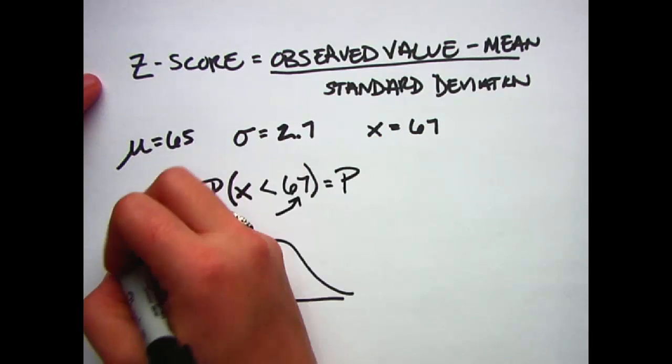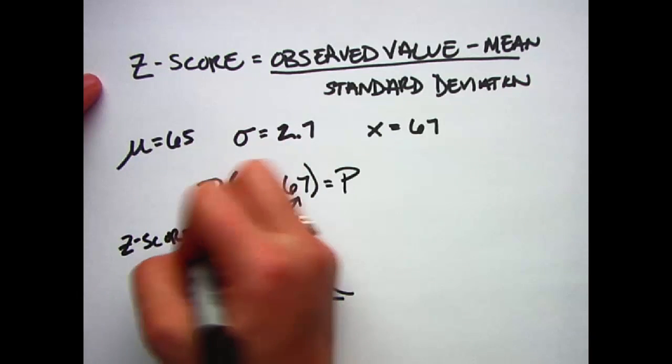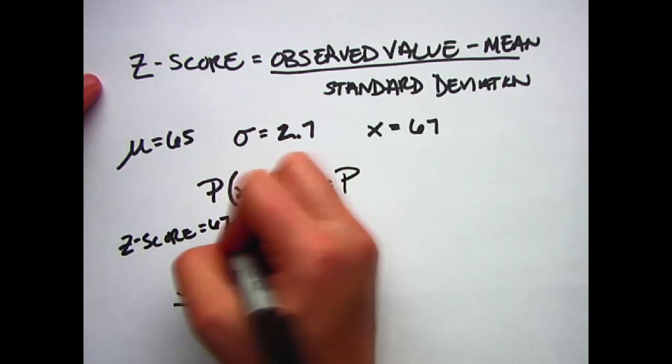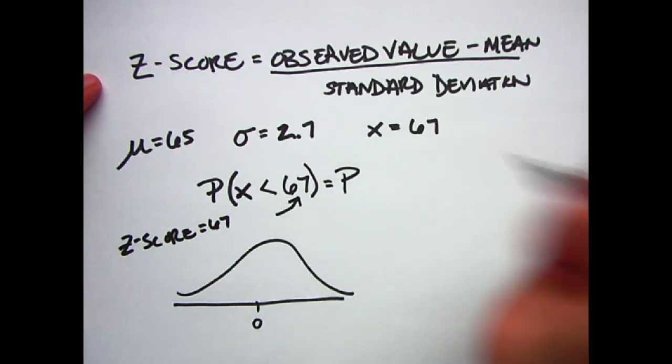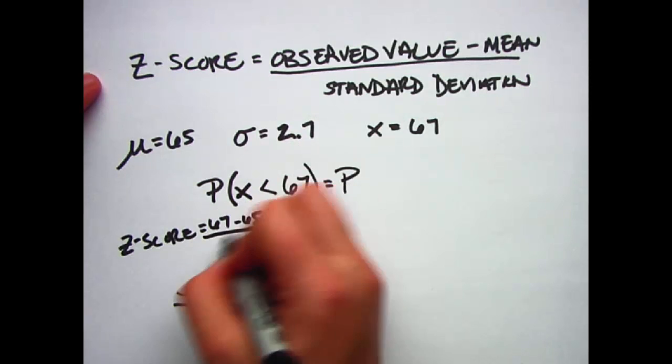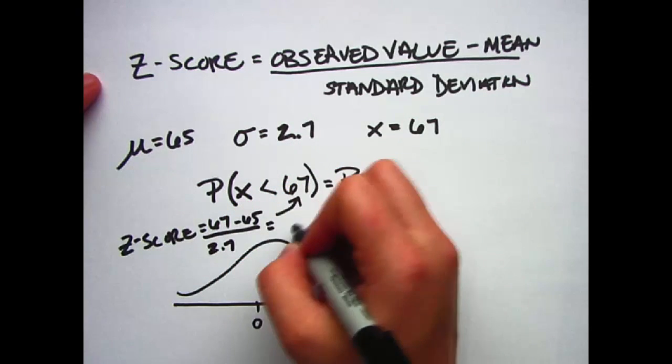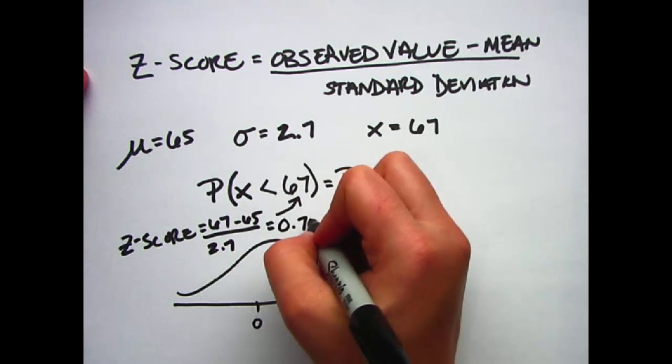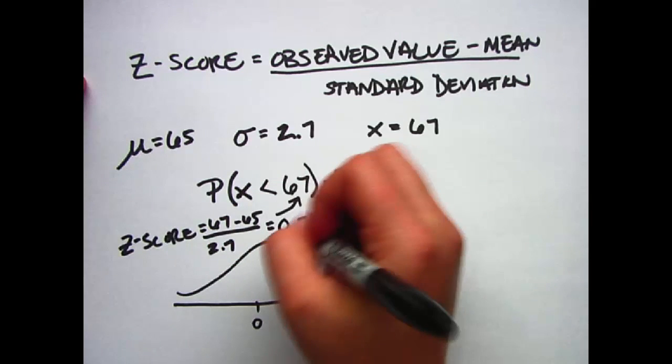I need to figure out what this standardized value would be for 67, so I'm going to calculate a z-score for that. That means 67 is my observed value, and I'm going to subtract my mean, which is 65, and divide by 2.7. This gives me a z-score or a standardized value of 0.74.